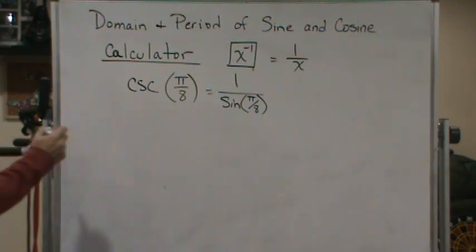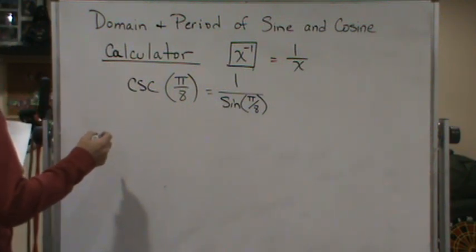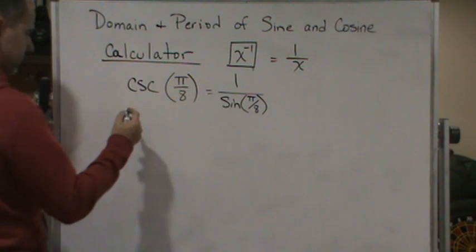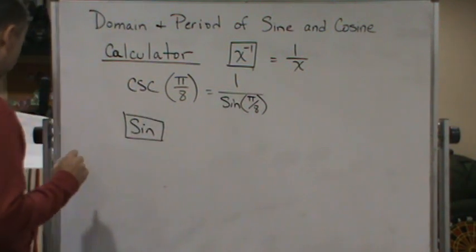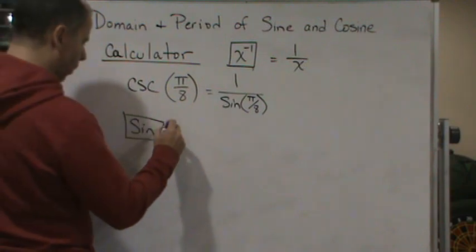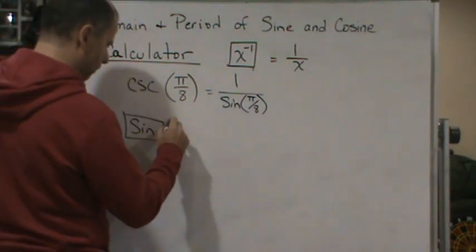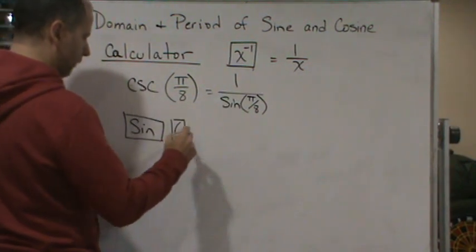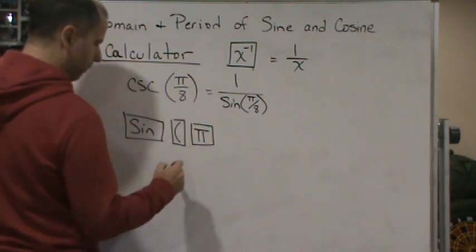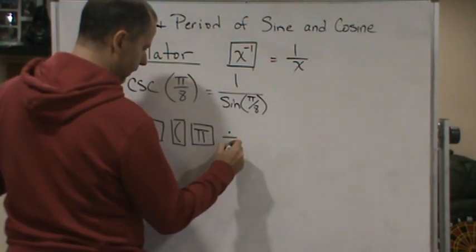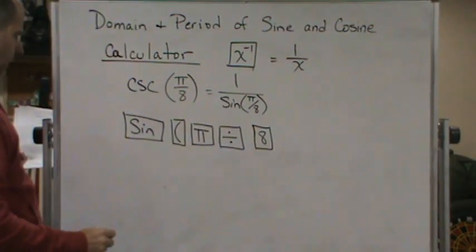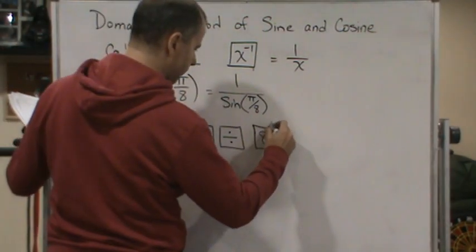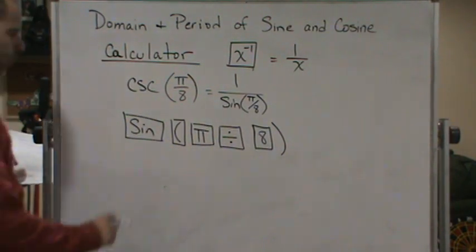The way I would do that on my calculator is I would first hit the sine button, and then I'd have to hit the parenthesis button, and then the pi button, and then the division button, and then the 8 button, and then I'd have to hit that. And at that point, you could hit enter.